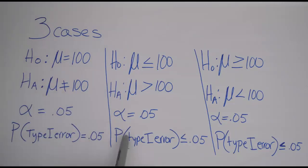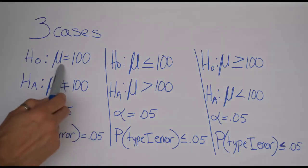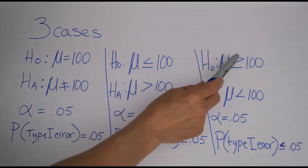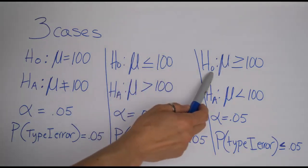And so again, hopefully your class has covered type 1 error and you've talked about the probability, but you might have heard your teacher say that it's actually equal to alpha always. Well, that's only true if your null hypothesis uses just the equal to case. If you have less than or equal to or greater than or equal to as your null hypothesis,